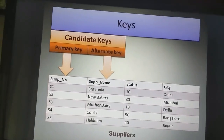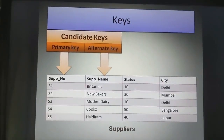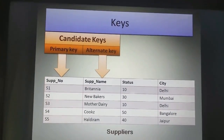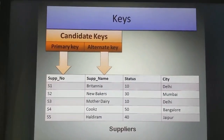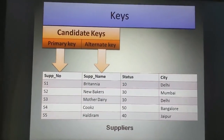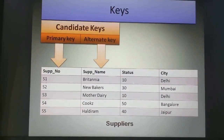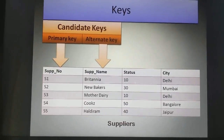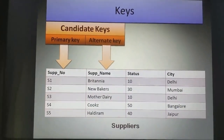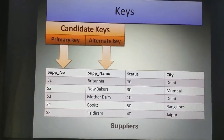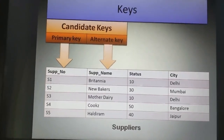Because of that, the 2 attributes — supplier number and supplier name — can act as the candidate key for the table suppliers. When there are 2 attributes for the candidate keys, the database analyst can decide which one acts as the primary key. Here, the primary key can be supplier number, as it is more unique — supplier name can sometimes be repeated. The other candidate key that is not the primary key will act as the alternate key.